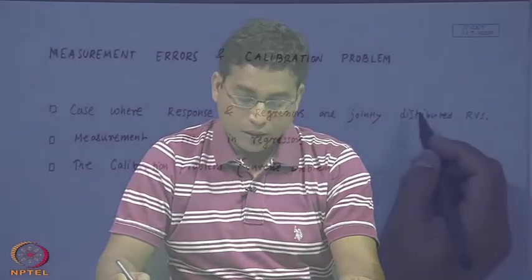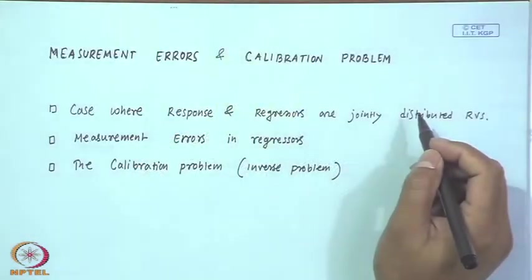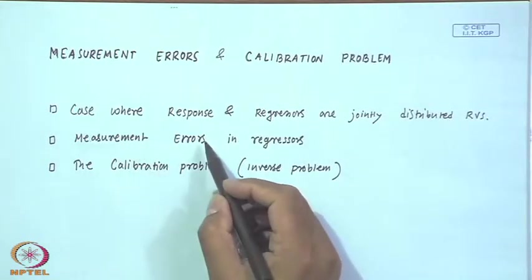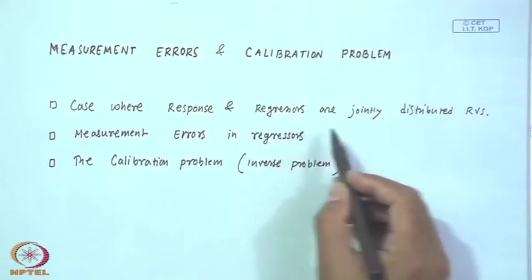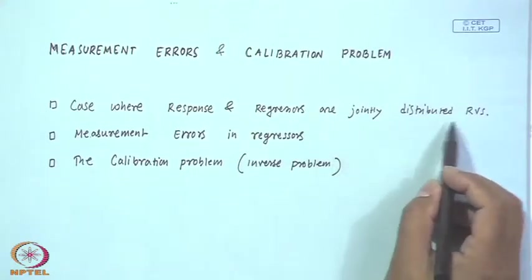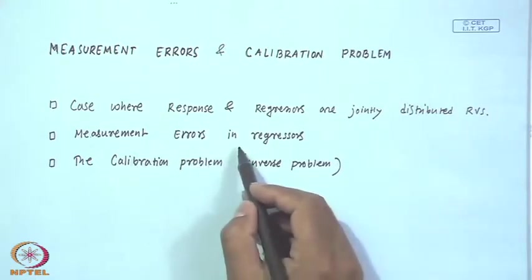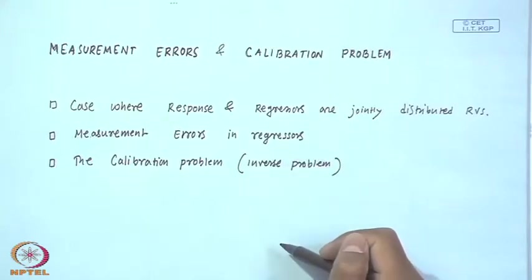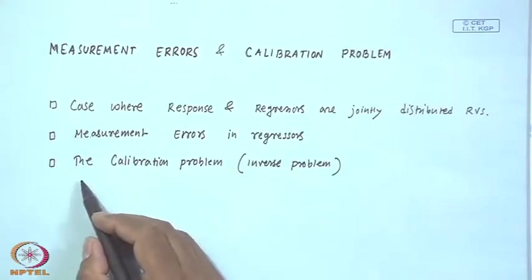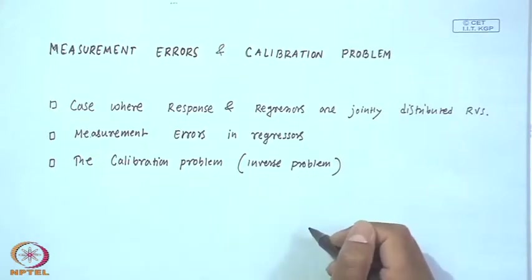Today we will be talking on a new topic called measurement errors and calibration problem. Here is the content of this topic: the case where the response and regressors are jointly distributed random variables, measurement error in regressors, and also the calibration problem, which is called the inverse problem.